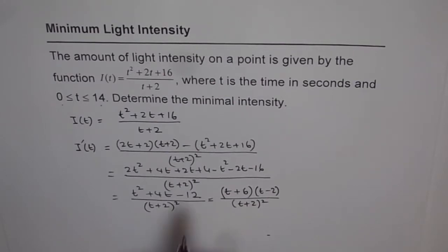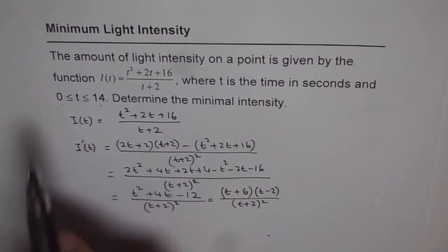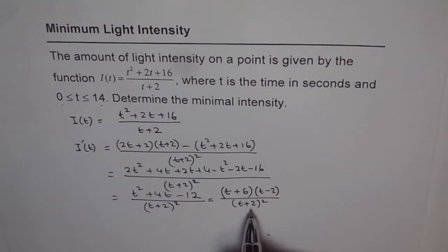Now, to find critical numbers, numerator should be 0, that will give us I'(t) equals to 0 and the denominator for singular points could be 0 which is t equals to minus 2. Since t is greater than 0, that is not in our domain. And even here t equals to minus 6 is not in our domain. So, the only point here which is a critical number is t equals to 2.